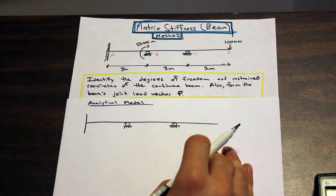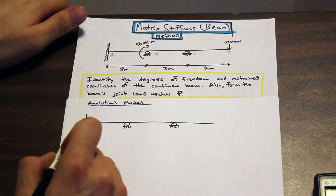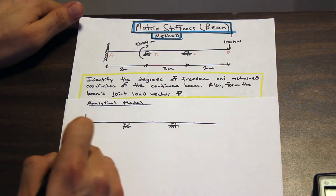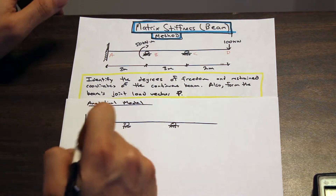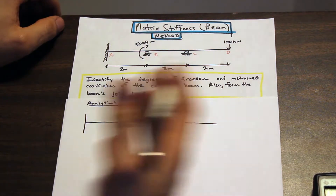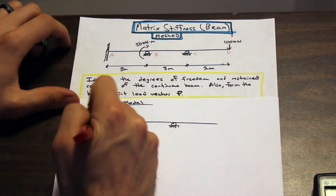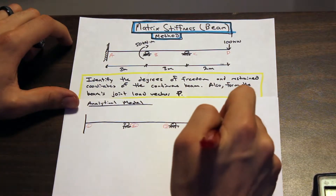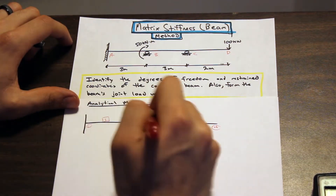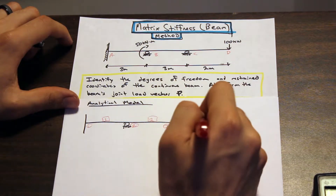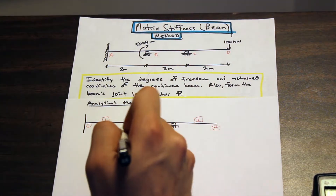The convention is you always start from the left and go to the right. When labeling, you always start with the degrees of freedom first. So let's look at this fixed end — a fixed end doesn't move in the y-direction and it doesn't rotate, so there are no degrees of freedom there. Let's number our joints starting from left to right, and we're also going to number the members. So we have members one, two, and three.